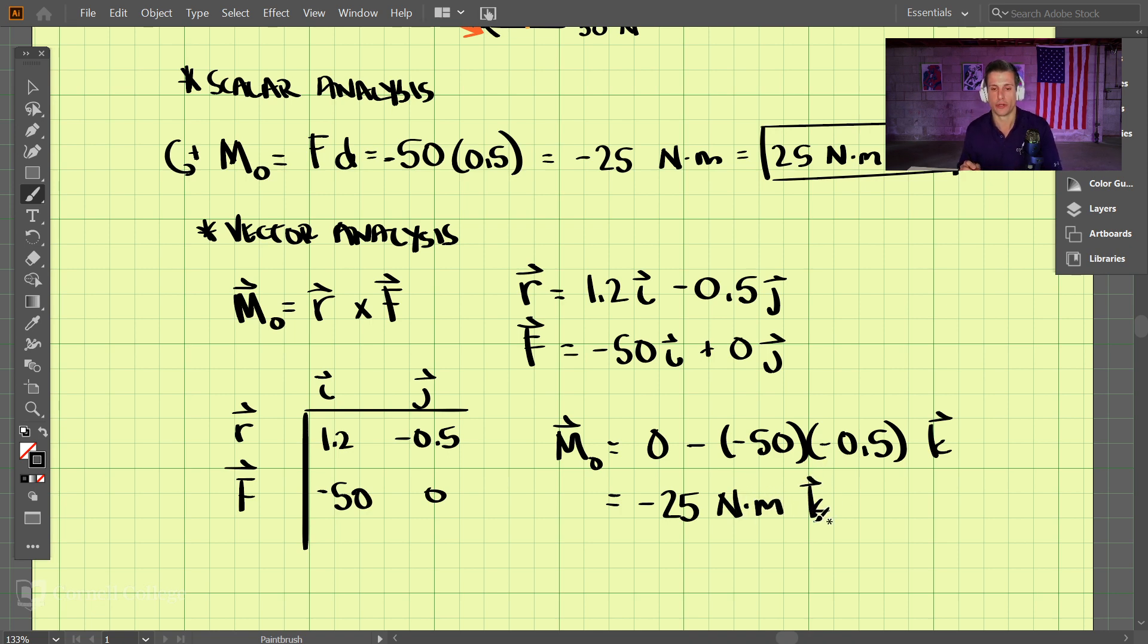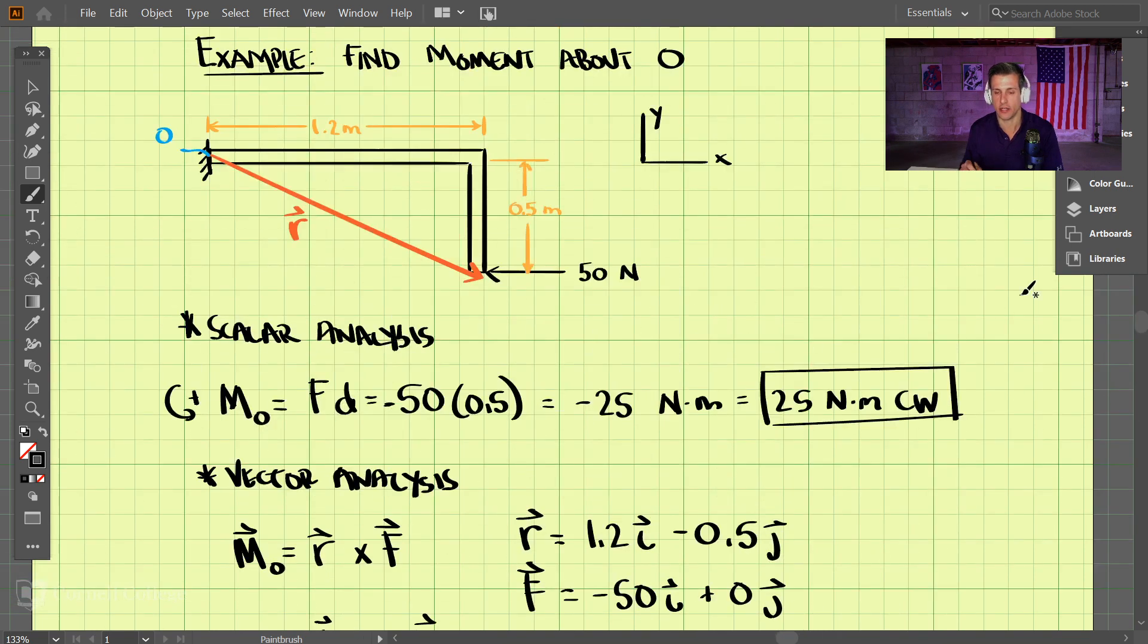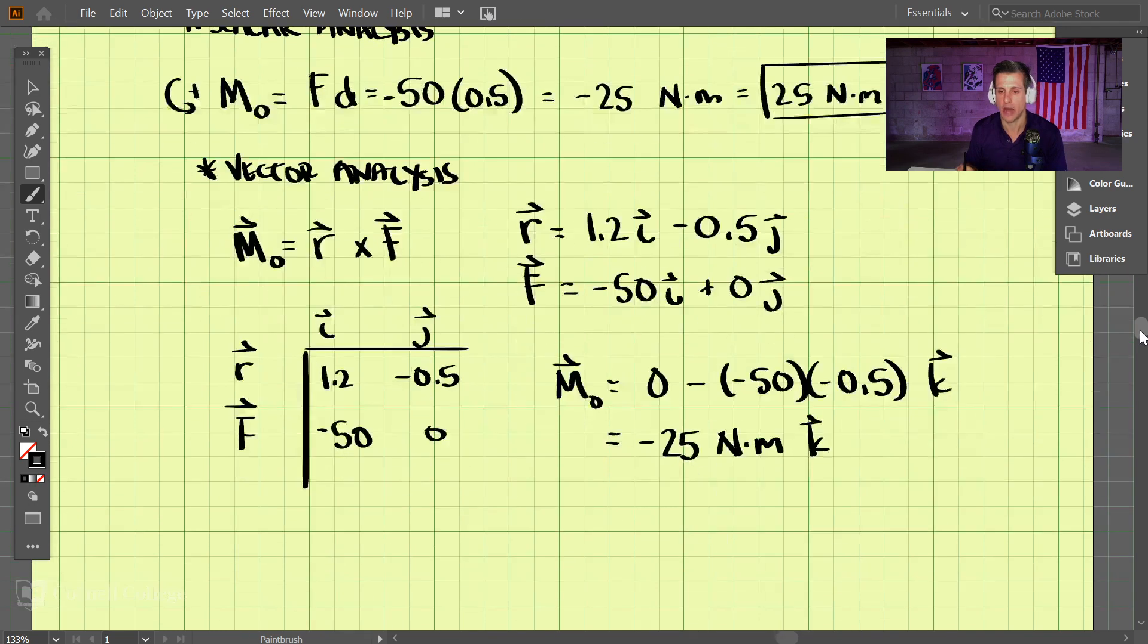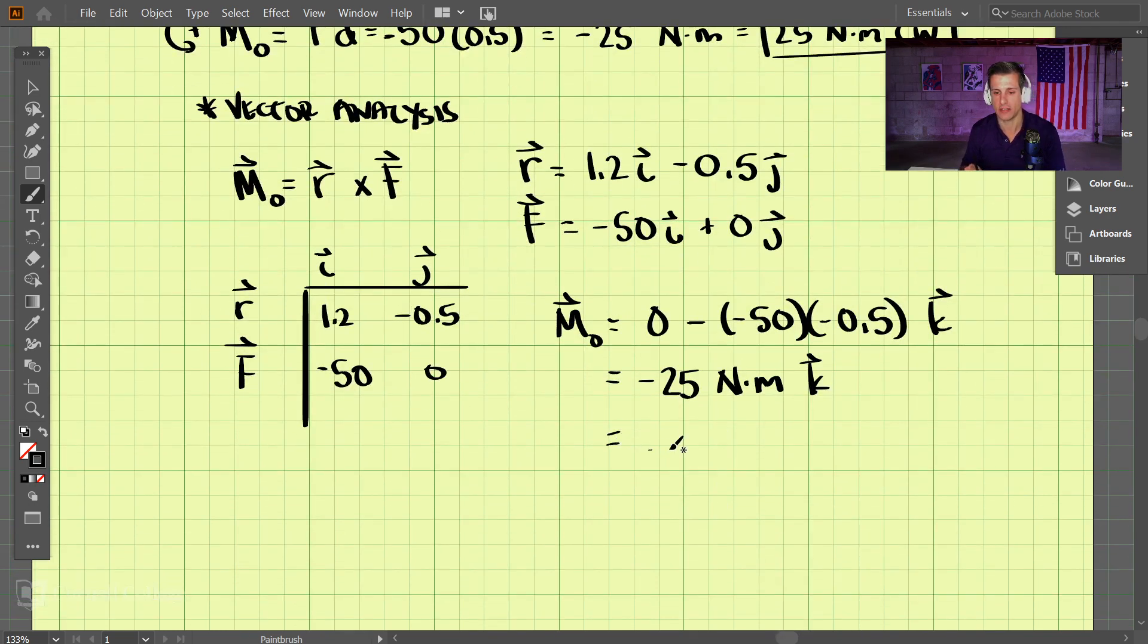If we draw the Z direction here, it's coming out at us. Using the right-hand rule, if we put our thumb in the Z direction and curl our fingers, that's the positive direction. This is opposite to that, so it equals 25 Newton meters clockwise.